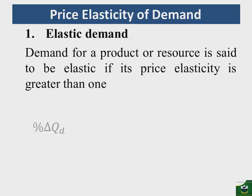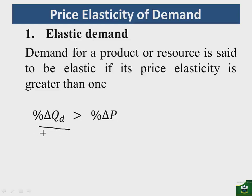In this case, the percentage change in quantity demanded, which is the numerator, will be greater than the percentage change in price. For this value to be greater than one, the numerator must be greater than the denominator. The denominator is the percentage change in price, so the ratio will only be greater than one if the numerator exceeds the denominator.